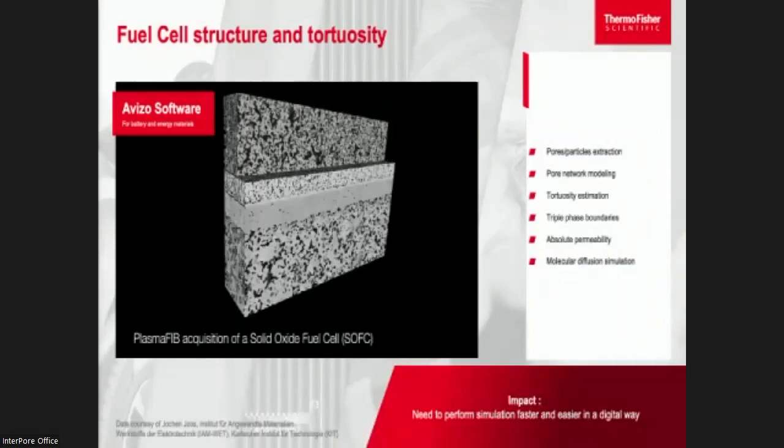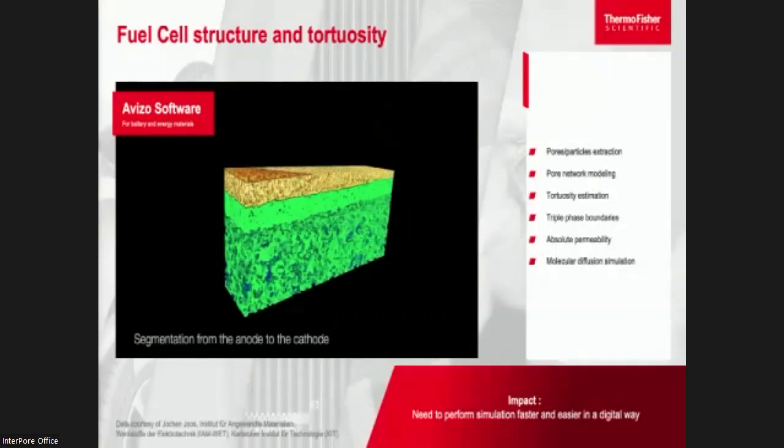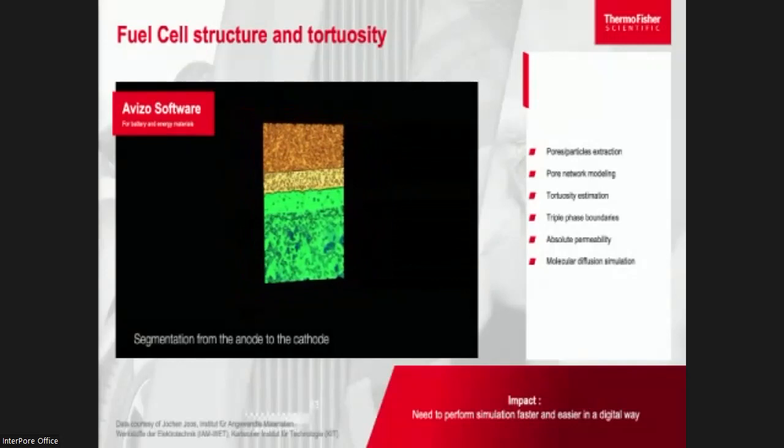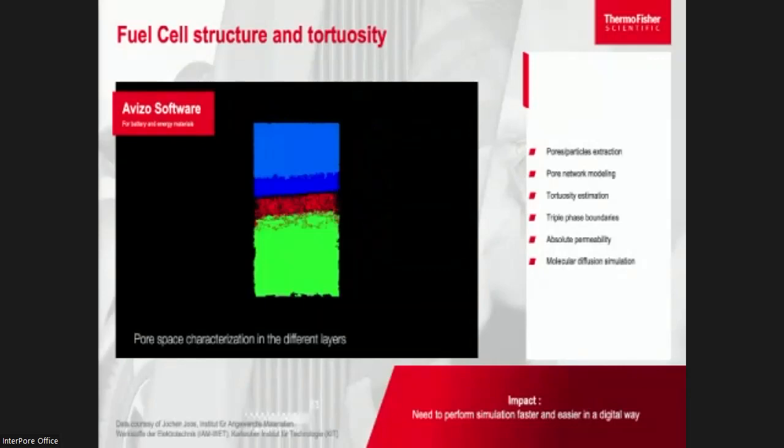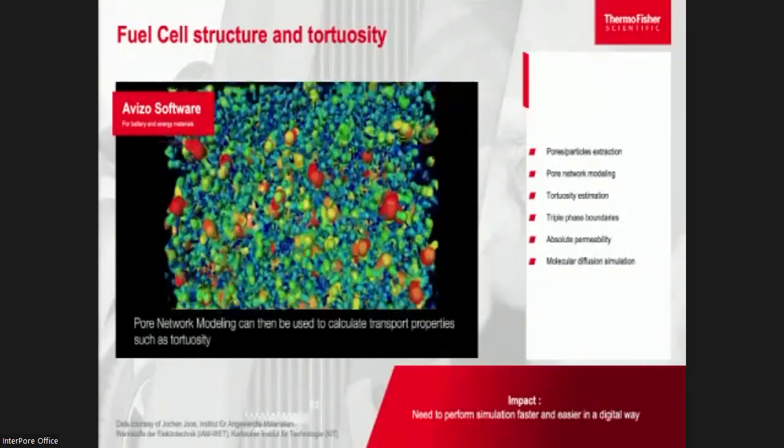We have taken one of our marketing videos to show, to illustrate this case, showing the steps in characterizing tortuosity in a solid oxide fuel cell. The acquisition was performed using a plasma FIB and the correction of the pore-backed effect, which we'll talk about in the next slide, was done using deep learning. Once the segmentation is done, we can characterize the space between grains and build a pore network model, which will then serve to compute transport properties such as tortuosity.